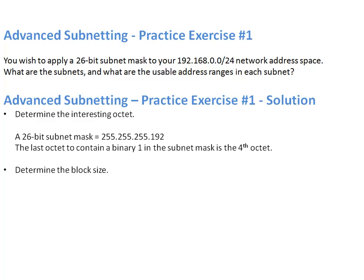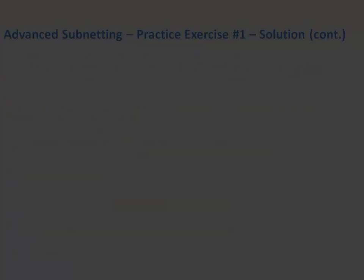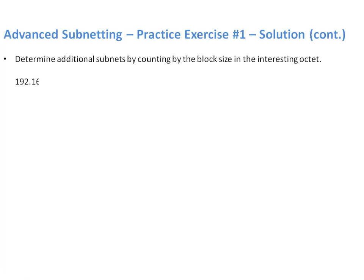Step 2, what's the block size? It's 256 minus whatever the subnet value is in that interesting octet — in this case it's 192. What is 256 minus 192? It's 64. So we're going to be counting by 64. For step 3, we set all borrowed bits to zero, giving us 192.168.0.0/26 as the first subnet. Now we start counting by the block size in the interesting octet: the fourth octet becomes 64, so the next subnet is 192.168.0.64.